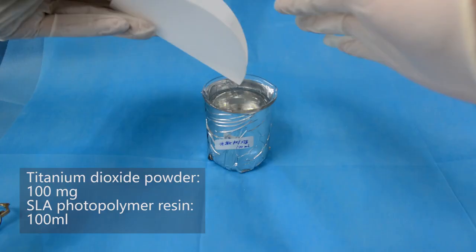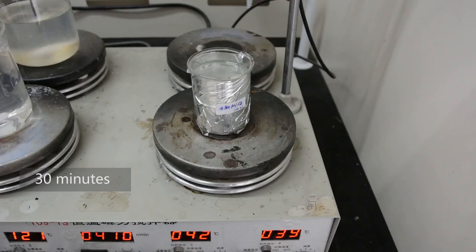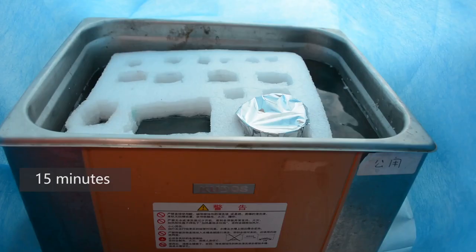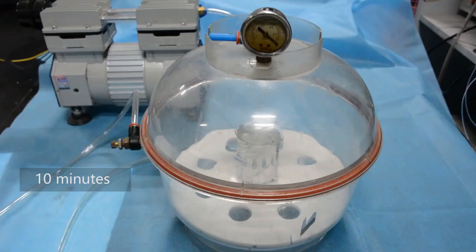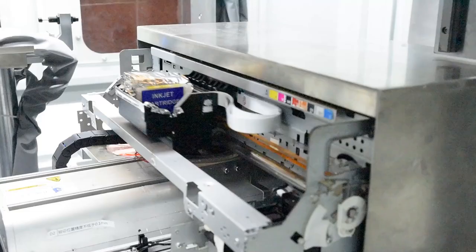Material preparation for spin coating printing. Add titanium dioxide powder into SLA photopolymer resin. Stir for 30 minutes on a magnetic stirrer. Seal with tinfoil and sonicate. Vacuum for 10 minutes. Load it into the storage syringe.